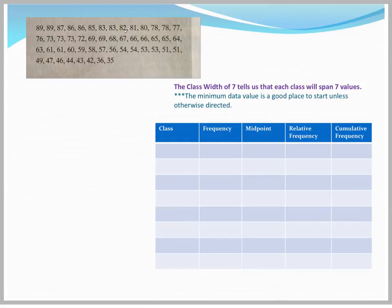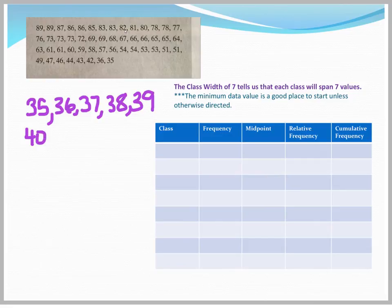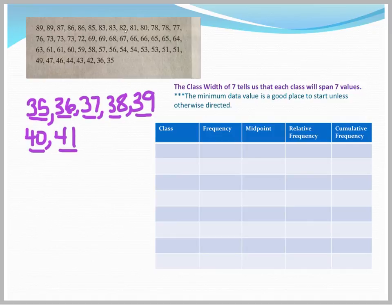The class width of 7 tells us that each class will span 7 values. That means that each class could contain 7 values. That doesn't mean that it can only have 7 values be put into it, but what it means is that it could be satisfied by 7 values. So if I start my class width at the number 35, then the number 35 could be in that class, 36, 37, 38, 39, 40, 41. So that's 1, 2, 3, 4, 5, 6, 7 values. So my first class goes from 35 to 41.